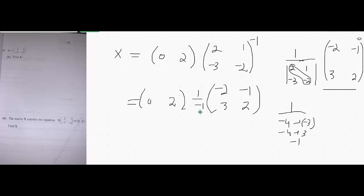So this 1 over minus 1 is basically minus 1, so I will multiply this minus 1 inside this matrix. So this will become plus 2 and it will become plus 1, it will become minus 3 and minus 2.